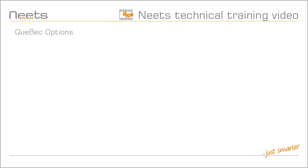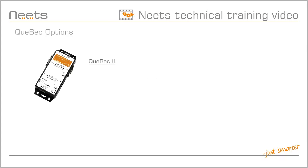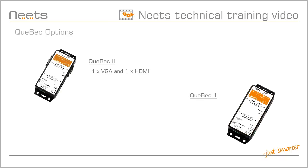Neats Quebec comes in two options: Quebec 2, with one VGA port and one HDMI port, and Quebec 3, that has two HDMI ports. Both Quebecs have one port that can be used as RS232 or infrared, and three IO ports.